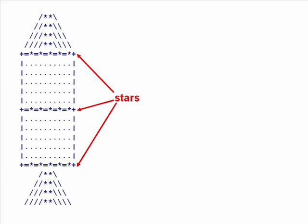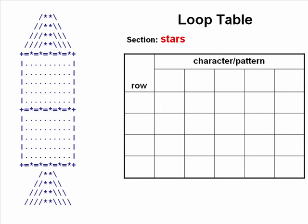Now let's look at the star pattern we see in three places on the rocket ship. This is made up of just a single row, but we can still use a loop table to figure out what we need to print. There's really only one row: a plus sign, an equal-sign/star pattern, another plus sign, and then a new line. I need one plus, one plus, and one new line. I just need to determine how many stars — and if I count, I need five of that particular pattern.